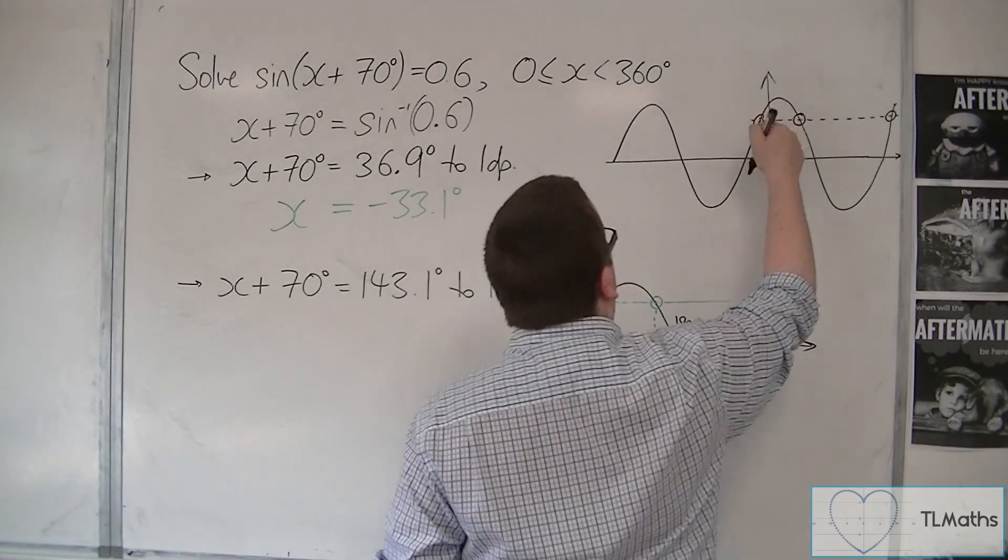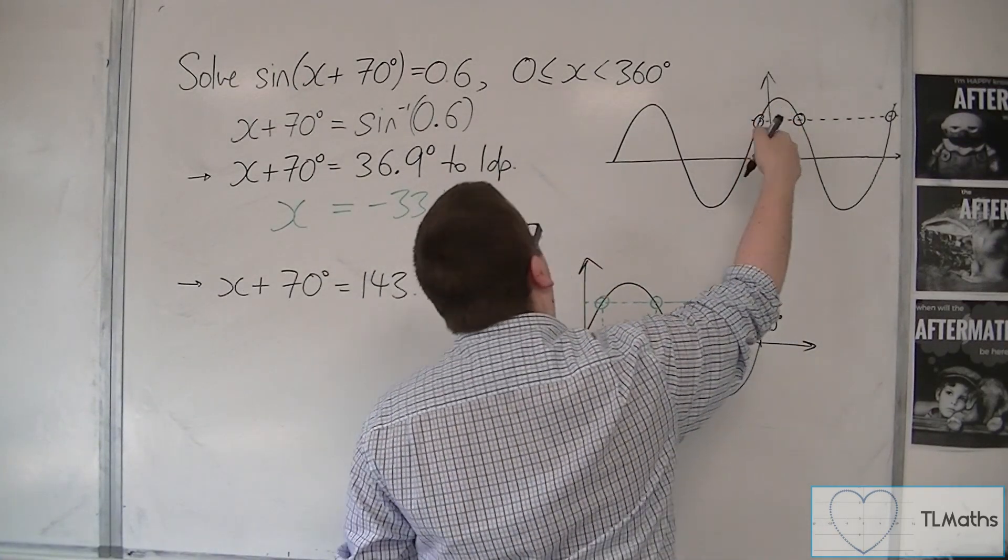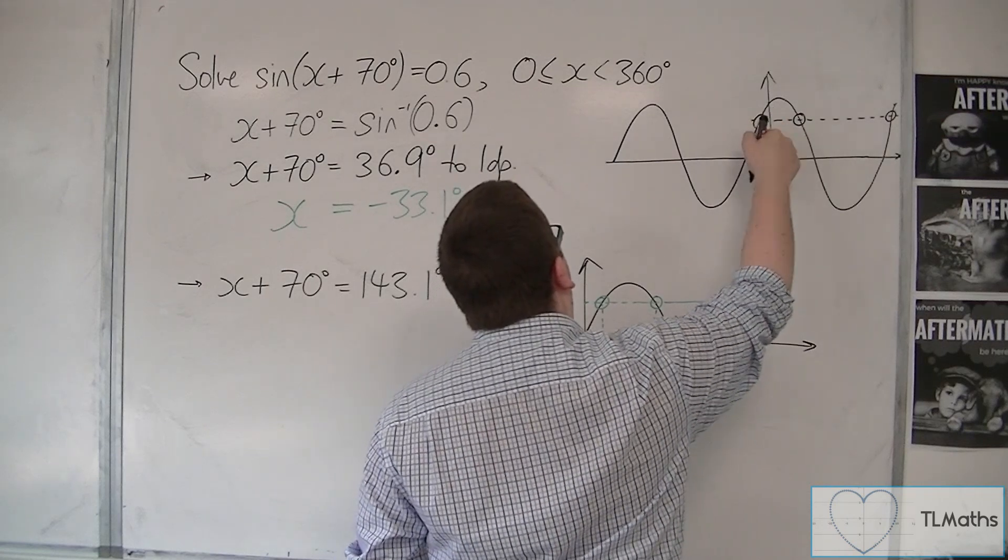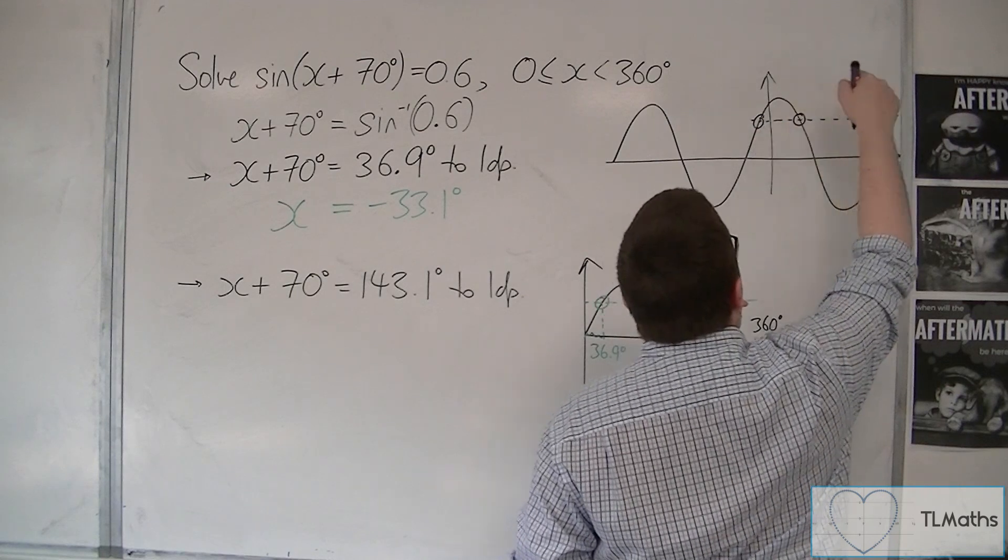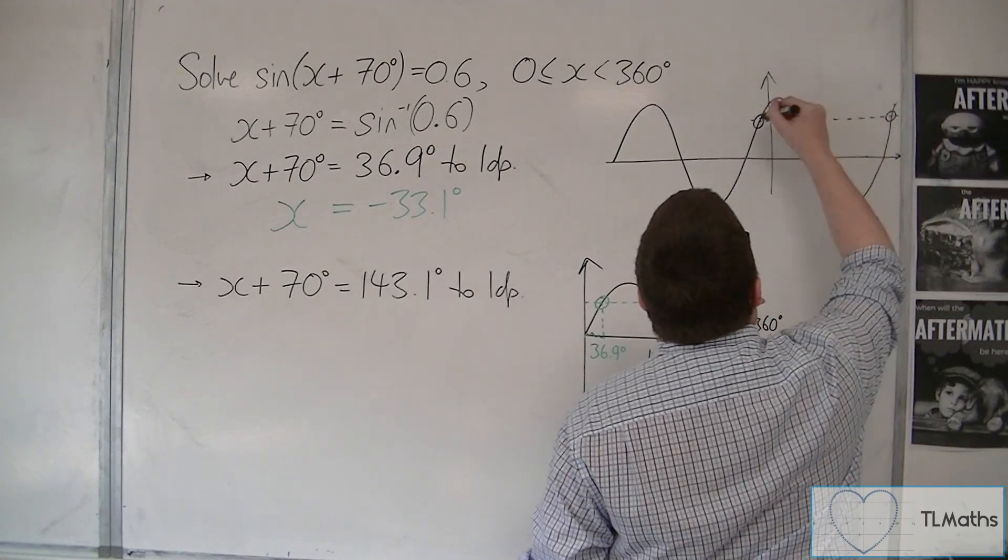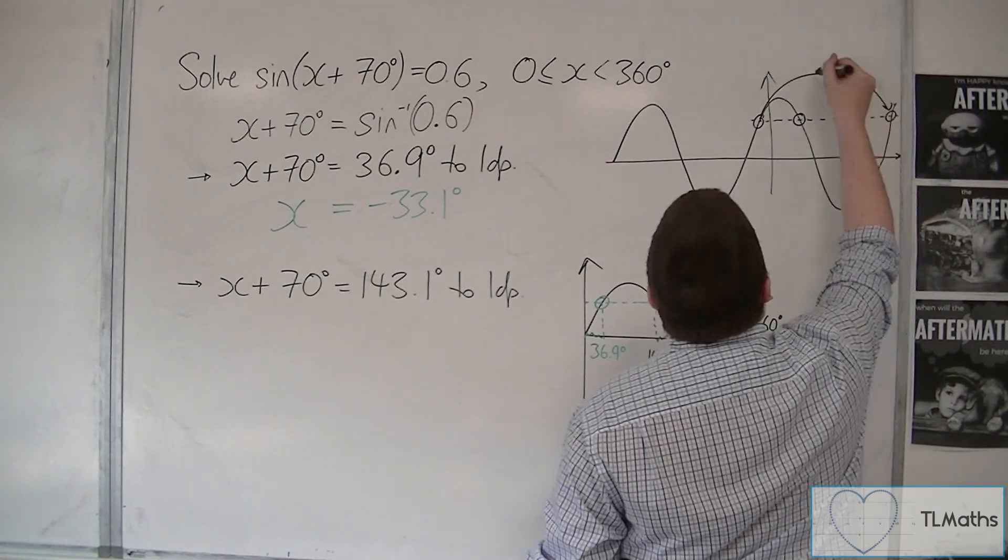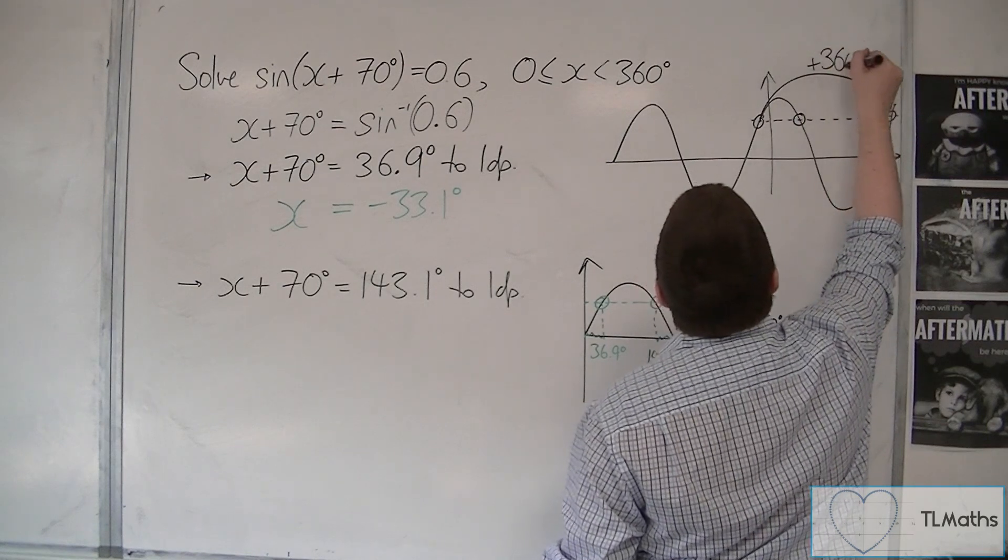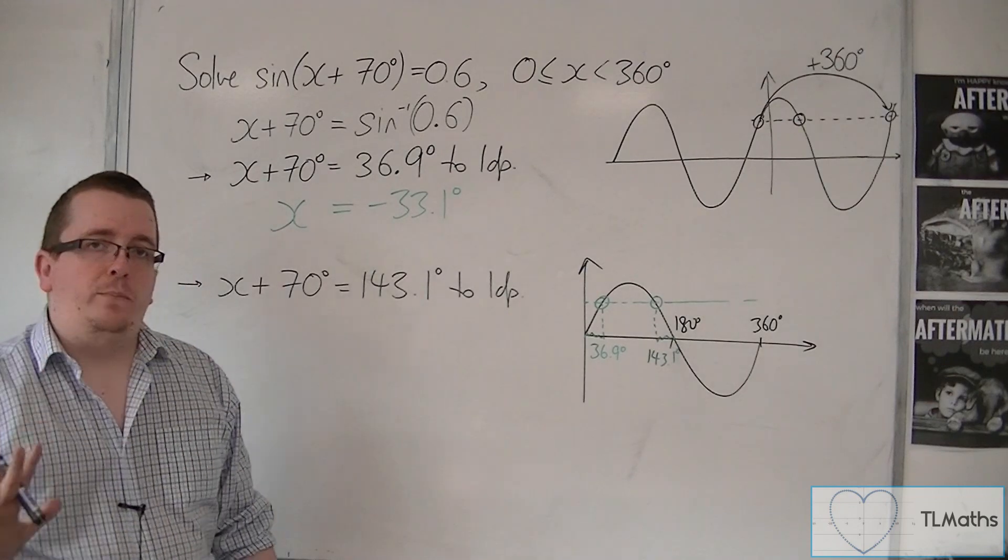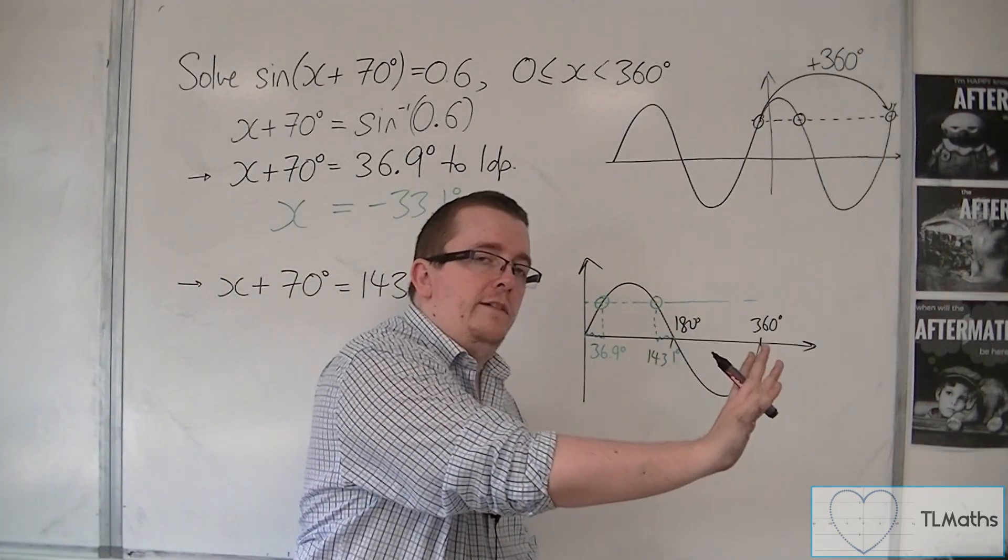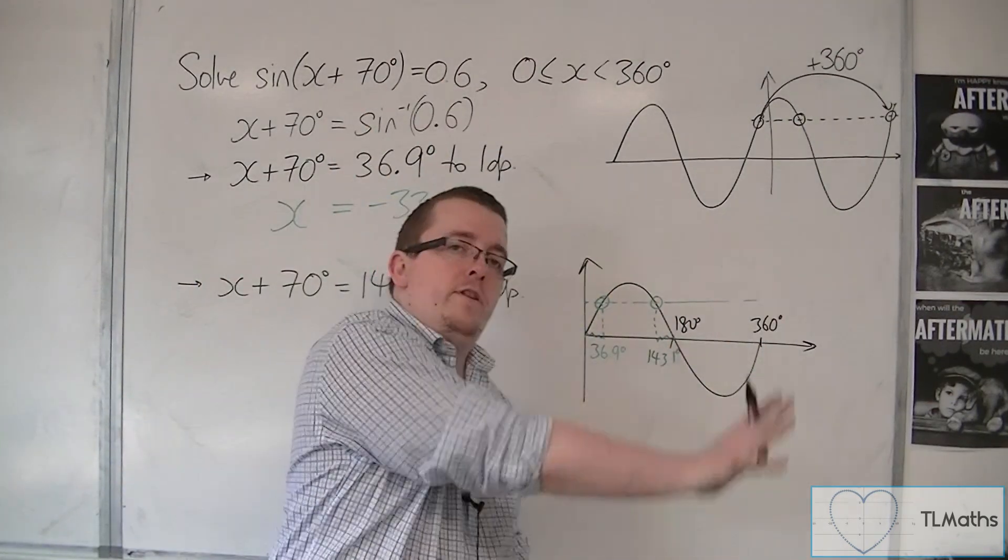This is the solution that my calculator has now got. It's minus 33.1. So, in order to get this solution over there, I must add on the period of the function. So, I add on how much gets me from one bit of the curve to the other. One whole period of the function, as taken from the previous video.